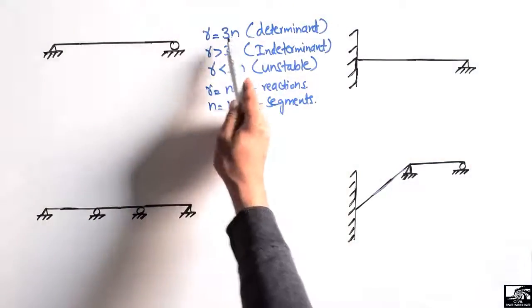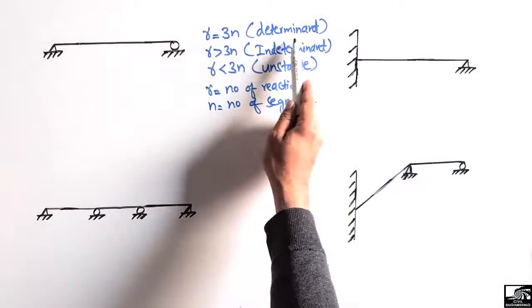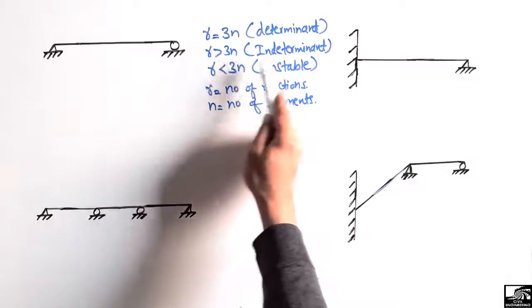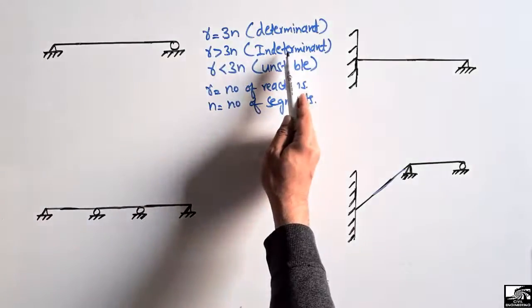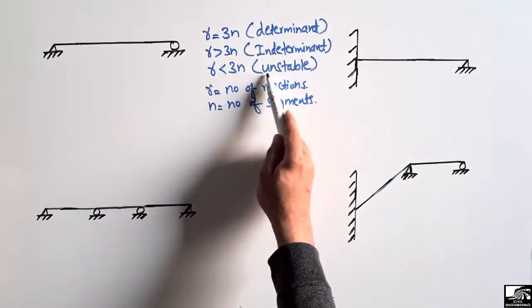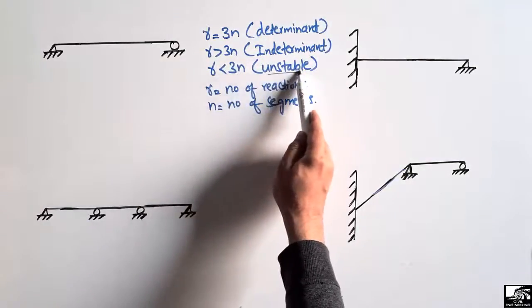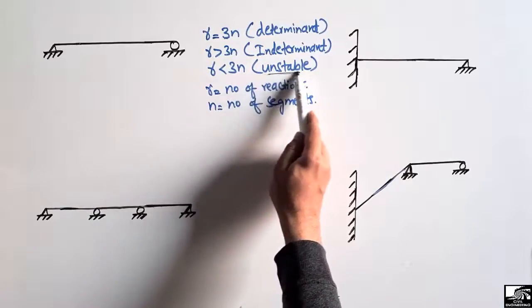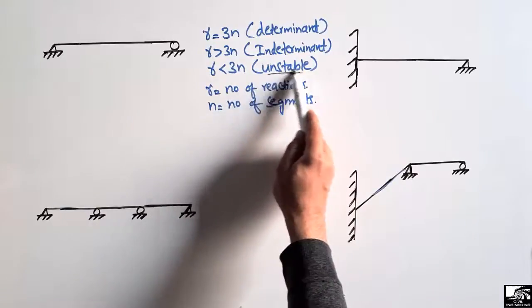To summarize: if R equals 3n it is a determinant beam; if R is greater than 3n it is an indeterminate beam; and if R is less than 3n it is an unstable beam that will collapse under loading conditions.